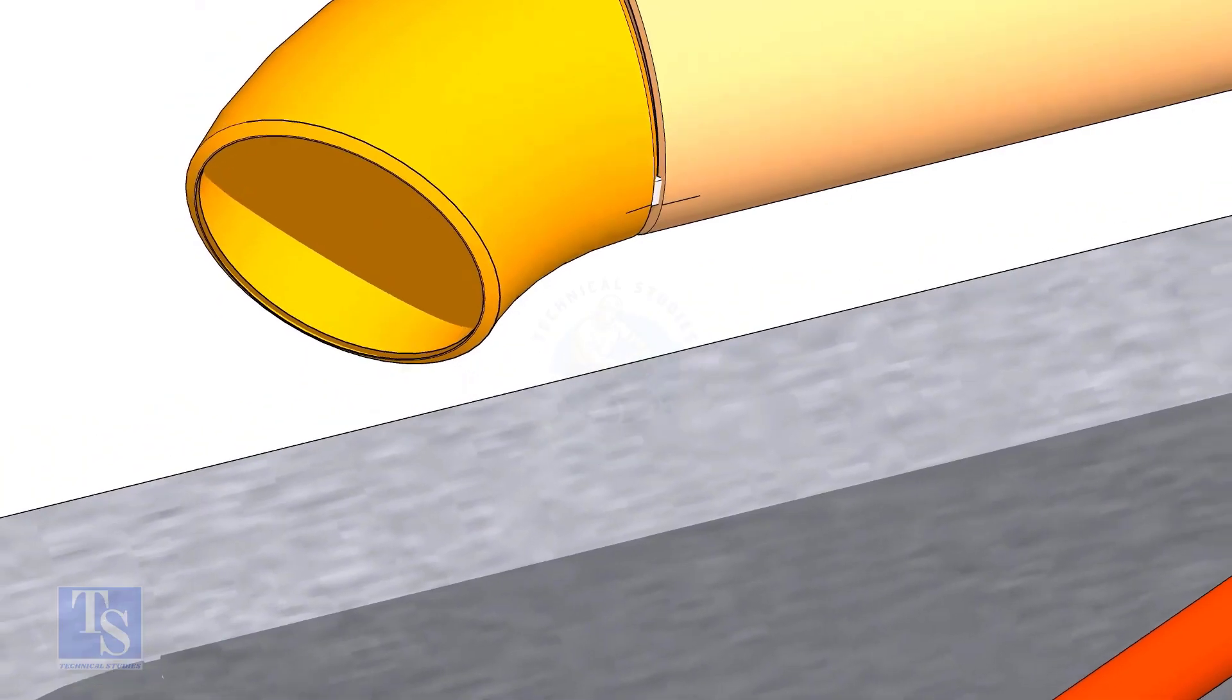Note down the readings. If both readings are the same, the elbow face is exactly 45 degrees to the pipe.